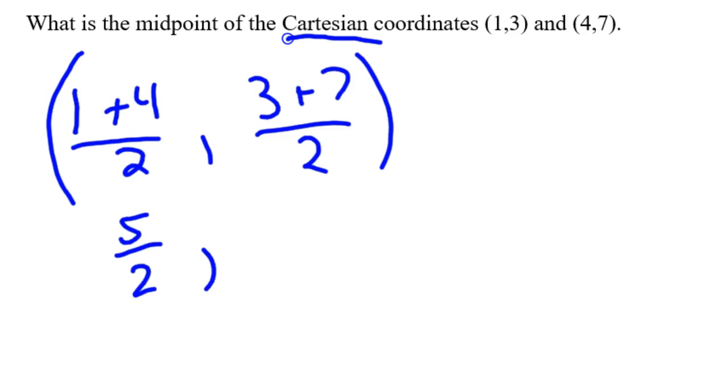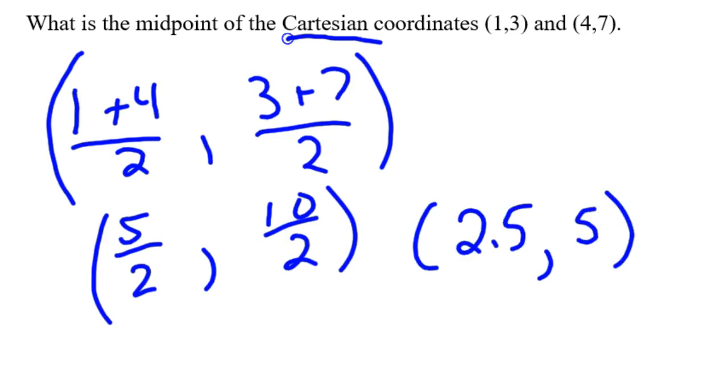So five halves, and ten, let's see, yeah, ten halves. And so, in other words, two point five comma five is your midpoint. I mean, that's the quick way to do it.